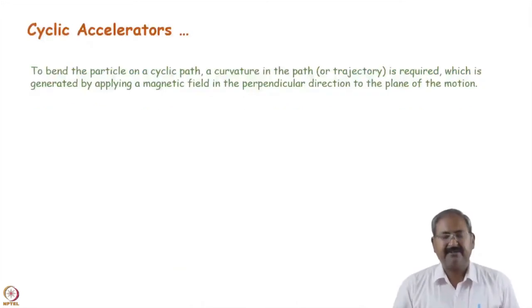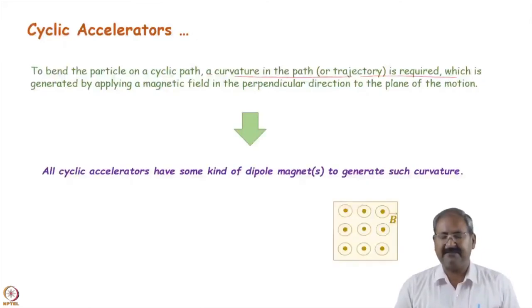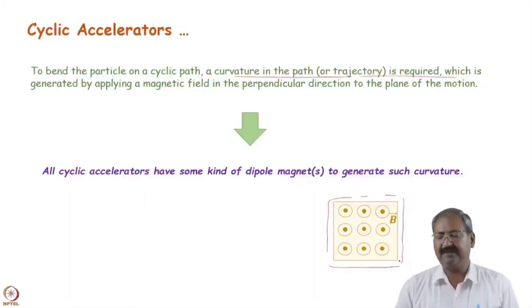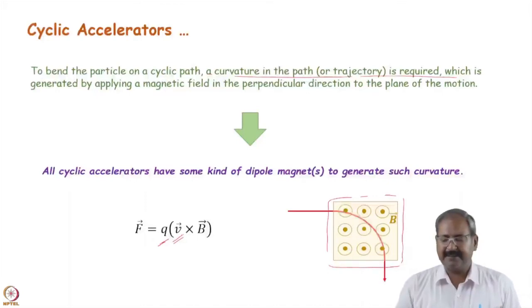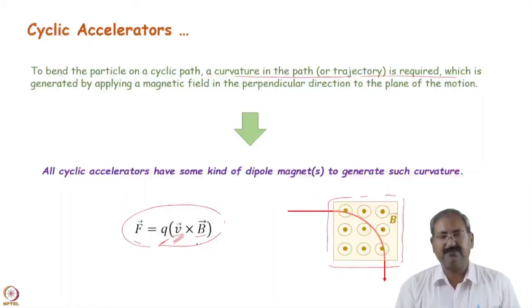To send the particle back to the same RF cavity we must generate curvature in the path. Suppose there is a magnetic field perpendicular to the screen and coming out of it — a homogeneous magnetic field in that region. When a particle of charge q with speed v passes through this field, it feels a force given by F = qv × B. Because this is a cross product of v and B, the force is perpendicular to the plane formed by the velocity vector and the magnetic field vector.